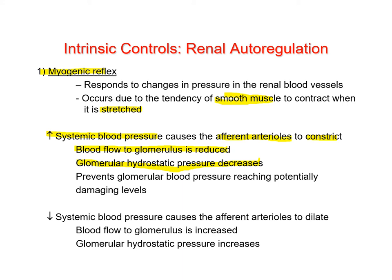Afferent arteriole constriction drops glomerular hydrostatic pressure and prevents it from reaching potentially damaging levels. One serious consequence of chronically high blood pressure is injury to the glomeruli — even young people with high systolic blood pressure can damage their glomeruli significantly. The opposite situation — lower than normal systemic blood pressure — triggers afferent arteriole dilation, raising glomerular hydrostatic pressure and therefore GFR.